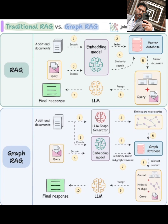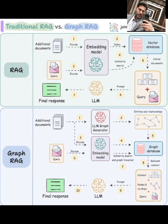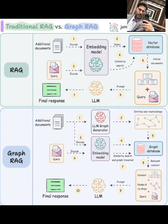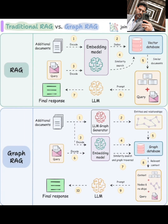Now, let's explore graph RAG. This approach takes things a step further by understanding the relationships between different pieces of information. Again, we start with additional documents. Instead of just embedding them directly, we use an LLM graph generator to extract entities and relationships from these documents. Think of it as identifying the key players and how they connect to each other.